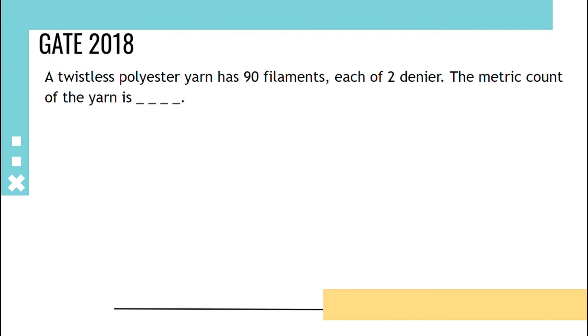Given that each filament is 2 denier, 90 filaments make yarn, so yarn denier will be 90 into 2, that is 180 denier. We have to find metric count.